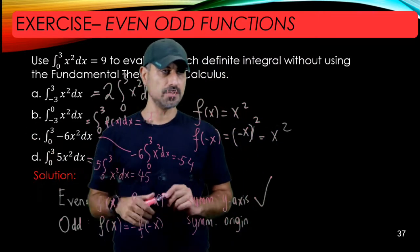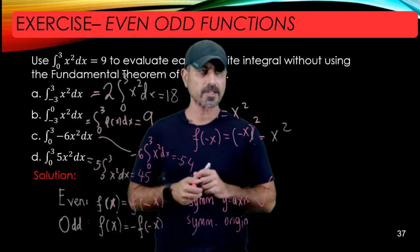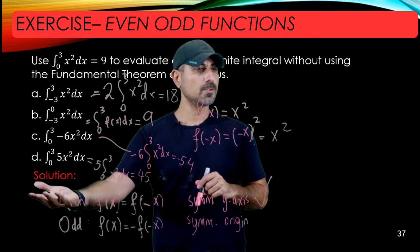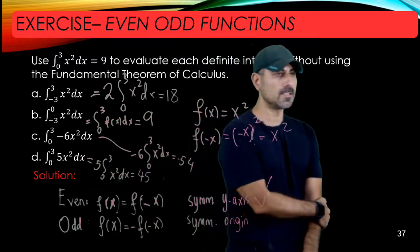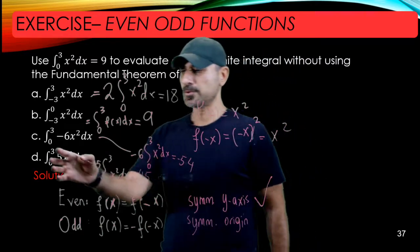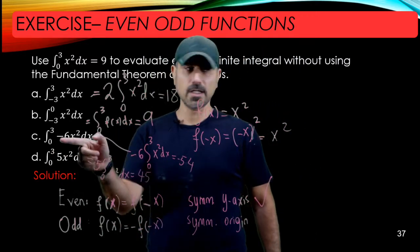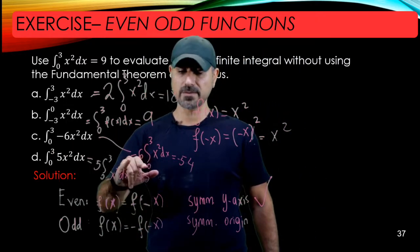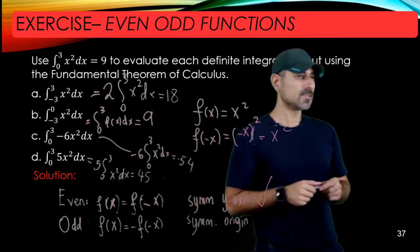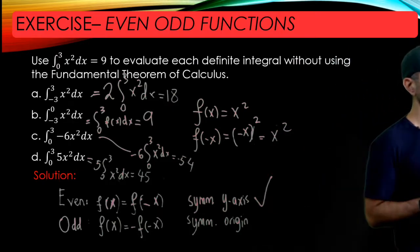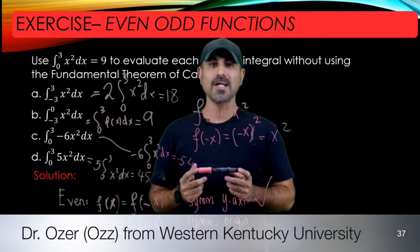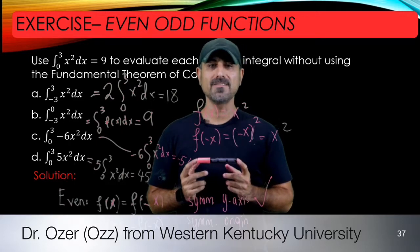Part (d) is done the same way: it equals 5 times the integral of x² from 0 to 3, and 9 × 5 = 45. For parts (a) and (b) we utilized the evenness of the function, and for parts (c) and (d) we used the general integration property that a constant multiple can be pulled out of the integral. This ends the video — thanks for watching, I'll see you in another video, bye.